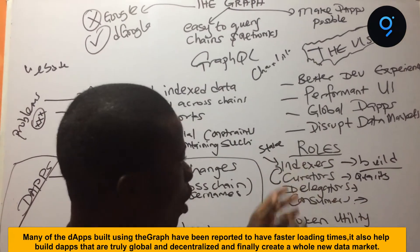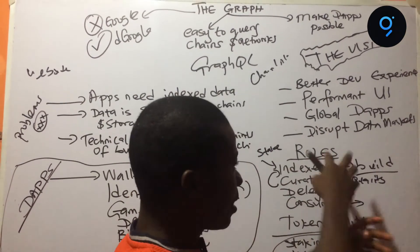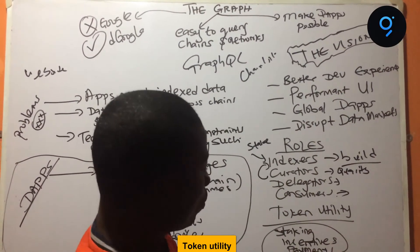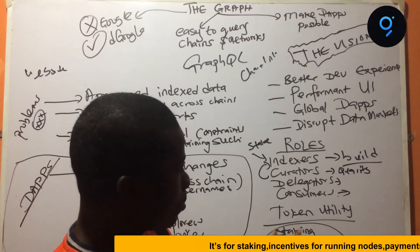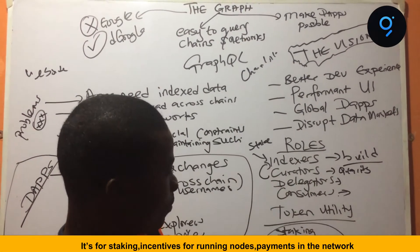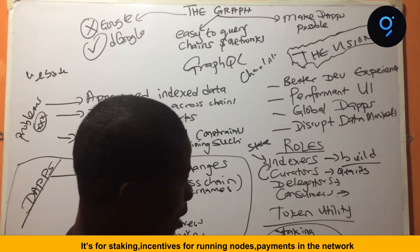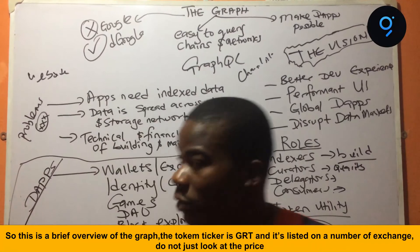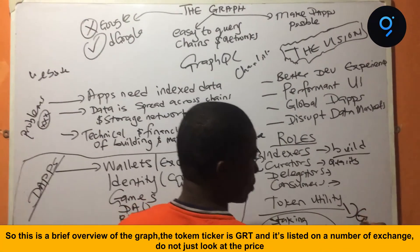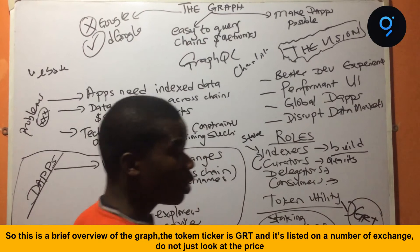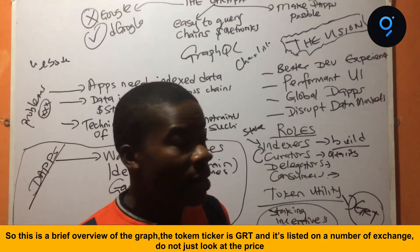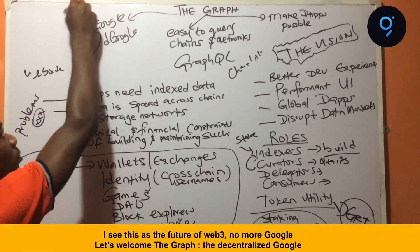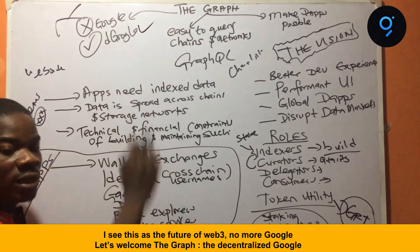And once we build global decentralized applications, this wants to disrupt the marketplace. In this space now, there is a market — there are those providing data, those providing signals, and the rest of them. So what is the utility of the token? It's for staking, incentives, running nodes, maintaining the integrity of the network, and for payments in the network. So this is a brief overview of The Graph. The token ticker is GRT, and it's listed on a number of exchanges right now. Don't just consider the price — this is the future. I see this as the future — no more Google, we have decentralized Google.